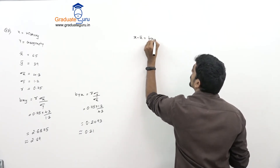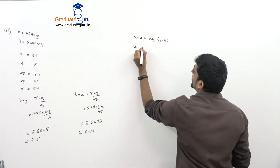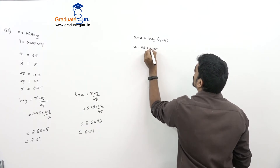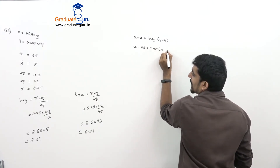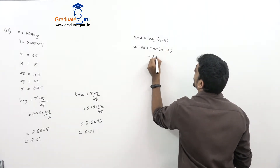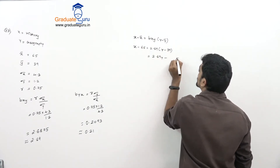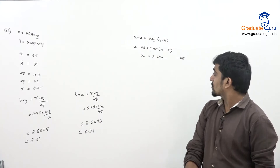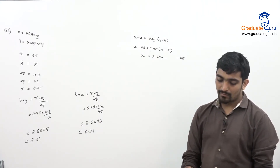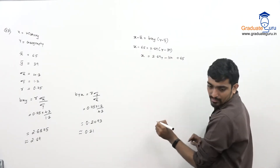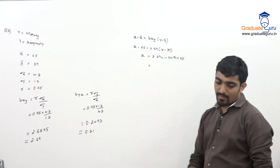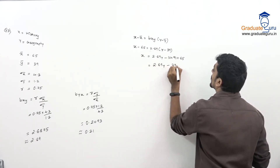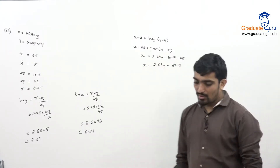Now I write the regression equation of x on y: x − x-bar = bxy × (y − y-bar). So x − 65 = 2.69 × (y − 39). This gives x = 2.69y − (2.69 × 39) + 65. Computing 2.69 × 39 = 104.91, so x = 2.69y − 104.91 + 65, which gives x = 2.69y − 39.91.